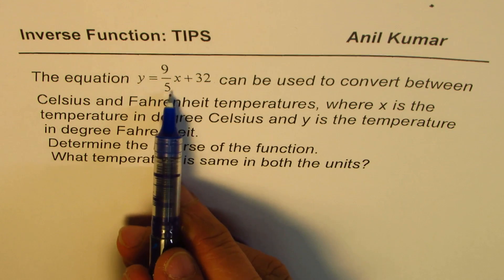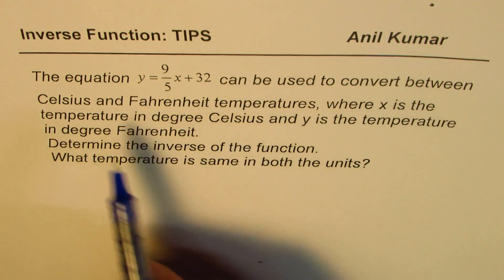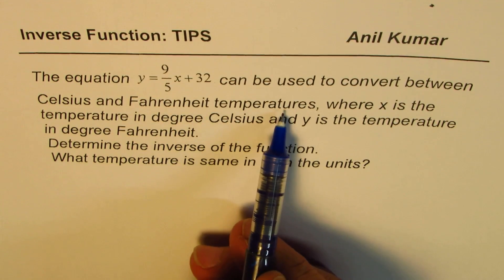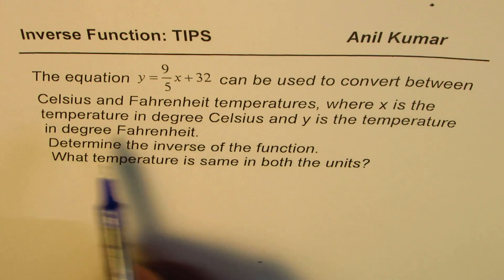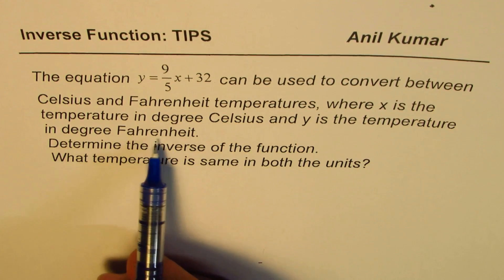The equation y equals 9 over 5x plus 32 can be used to convert between Celsius and Fahrenheit temperatures, where x is the temperature in degrees Celsius and y is the temperature in degrees Fahrenheit.